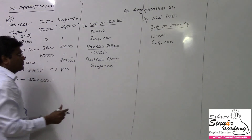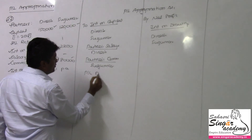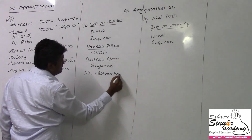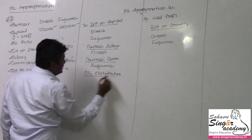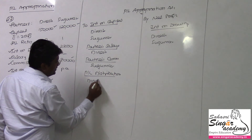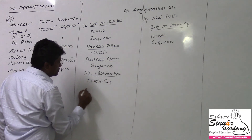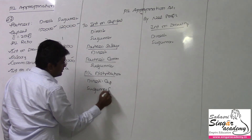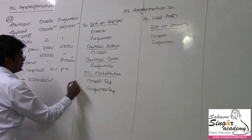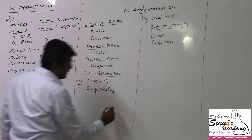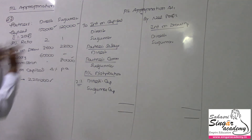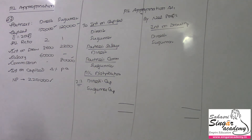Finally, we distribute the profit and loss. The remaining balance is shared between Dinesh capital account and Sugumar capital account in the ratio of 2 is to 1. That completes the skeleton format of the appropriation account, and now we will fill in the values.